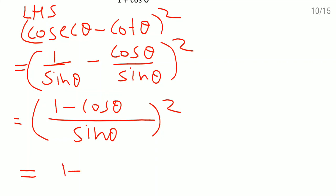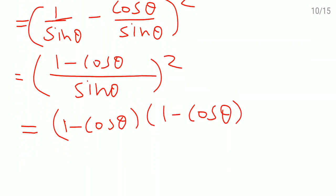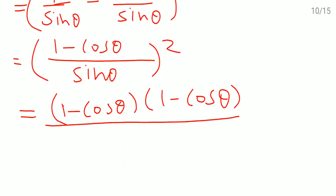So I'll write down 1 minus cos theta once and 1 minus cos theta second time because it is the square. So same bracket I'm writing twice. At the denominator sine square theta.